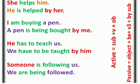Here are more examples of the passive. 'She helps him' becomes 'He is helped by her' — notice him and her, the change of subject to object. Another example: 'I am buying a pen' becomes 'A pen is being bought by me.' We use the third form of the verb and 'being.' In the next slide I am also telling the trick of how we convert active sentences into passive — like 'He has to teach us' becomes 'We have to be taught by him,' and 'Someone is following us' becomes 'We are being followed.'